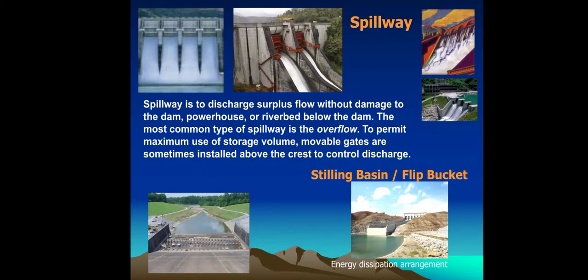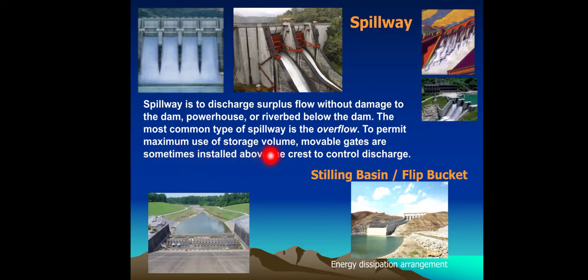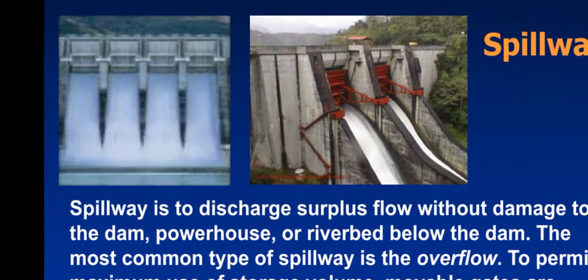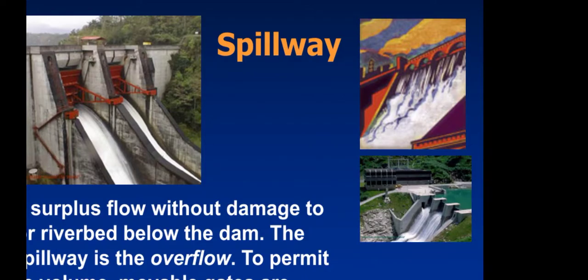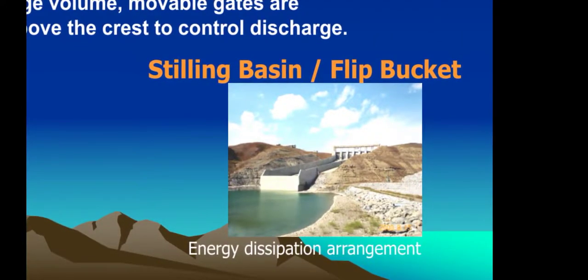Spillway: A spillway is used to discharge surplus flow without damage to the dam, powerhouse, or river width below the dam. The most common type of spillway is the overflow type. To permit maximum use of storage volume, movable gates are sometimes installed above the crest to control discharge. Energy dissipation arrangements include a stilling basin, flip bucket, and energy dissipator.